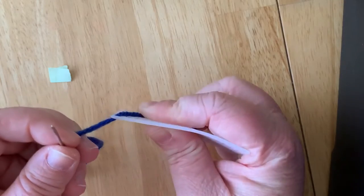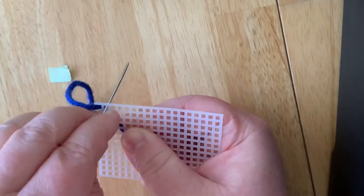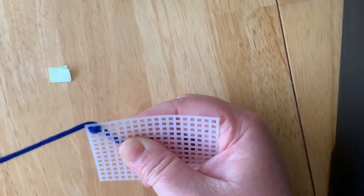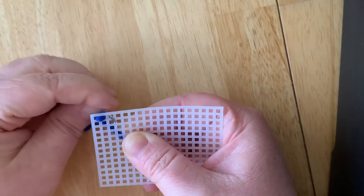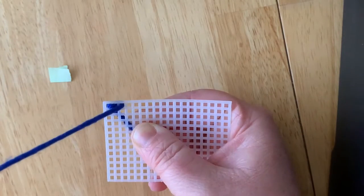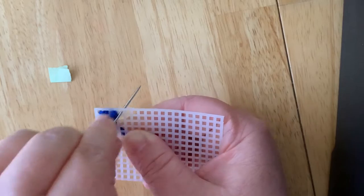We're coming up and down your next square. You can space this out if you want to, but I like to keep it simple. Come up the next one, pull tight, go down the next.